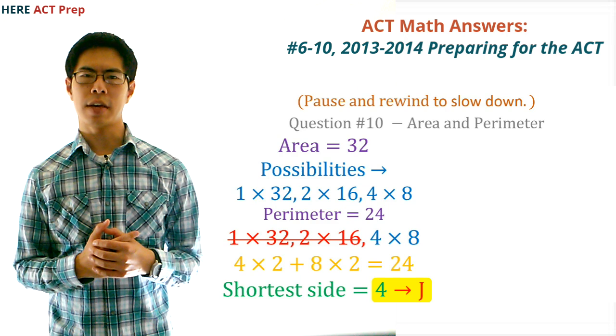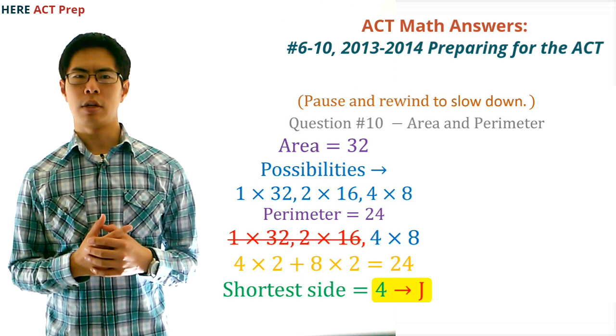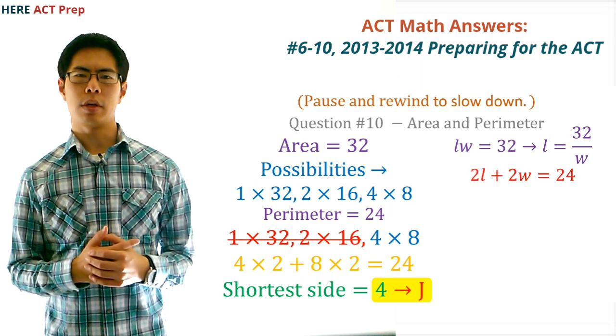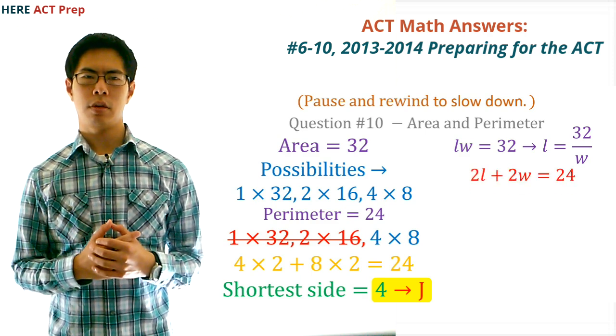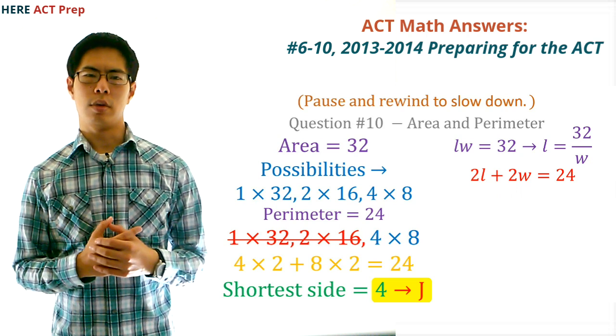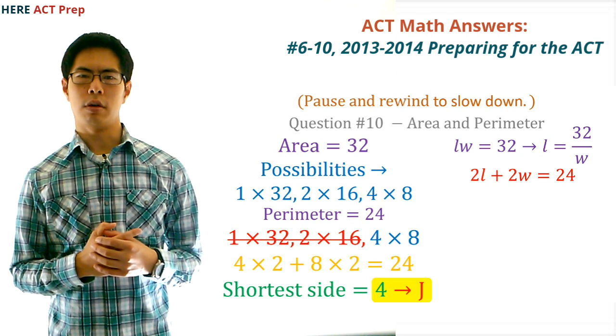If you didn't figure out this faster method for this question, you could set up a system of equations, but this is going to be really ugly. But here it goes. Here's how you do it this way. First, you set up the two equations. Lw equals 32, and 2l plus 2w equals 24. Then, you would use substitution by getting the first equation to be l equals 32 over w.